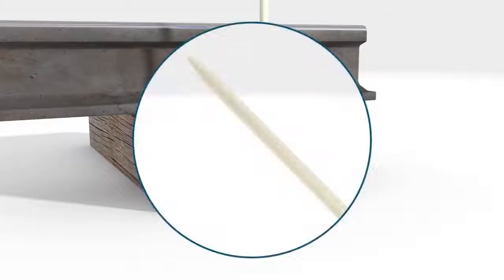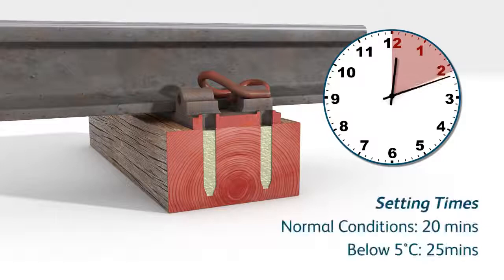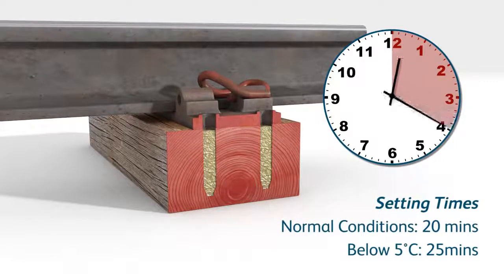If the material sets in the mixing tube, replace the tube with a new one and continue. In normal conditions, wait 20 minutes for the SpikeFast to set before drilling. This should be increased to 25 minutes in temperatures below 5 degrees Celsius.